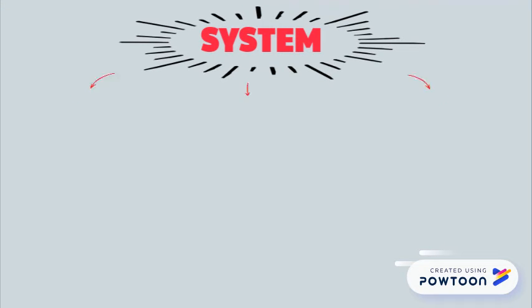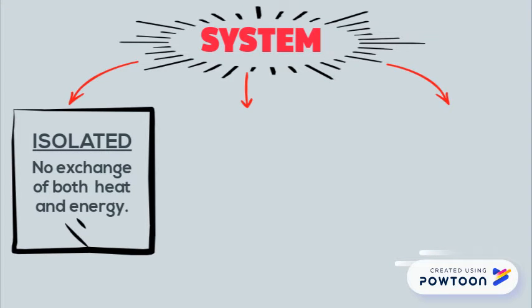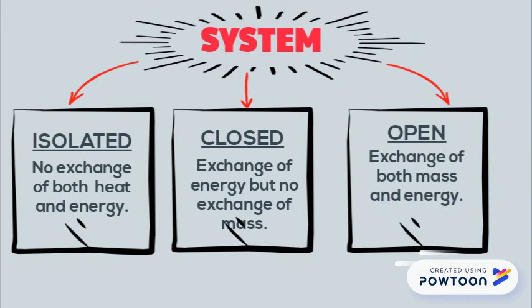Now, the system is of three types. Number 1: Isolated — which means there is no heat or energy exchange with the outer surroundings. Number 2: Closed — which means there is no mass transfer. Number 3: Open — which means there is both mass and energy exchange.